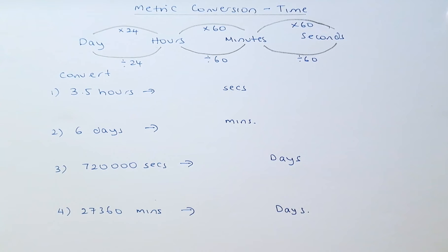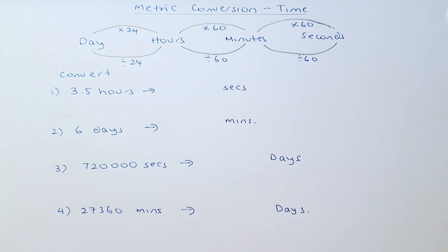For example, time could be measured in days, hours, minutes and seconds. Of course, you can measure in weeks and months, but we are going to limit ourselves to these four variables: day, hours, minutes and seconds.